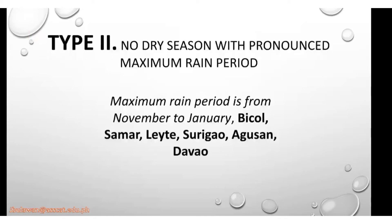For Type 2, they have no dry season, with a pronounced maximum rain period from November to January — that's three months. Places under Type 2 include Bicol, Leyte, Surigao, Agusan, and the Davao region.